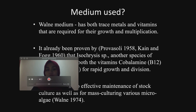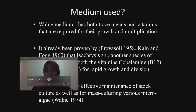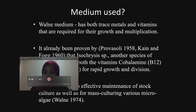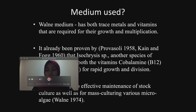In terms of medium, Walna medium is the best because it contains both trace metals and vitamins required for growth and multiplication. As proven by Provasoli 1958 and Kean and Fogg 1916, another species of microalgae requires vitamins cobalamin and thiamin for rapid growth and division. This medium is also effective for maintenance of stock culture as well as for mass-culturing various microalgae, as proven by Provasoli 1974.